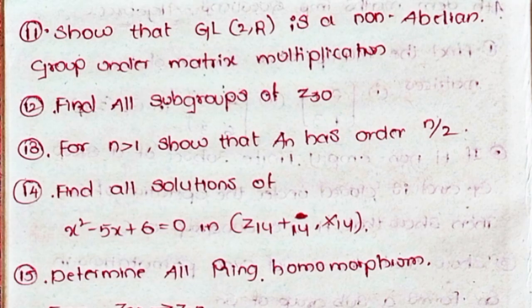Twelfth, find all subgroups of Z30. Thirteenth, for N greater than 1, show that A_N has order N/2.